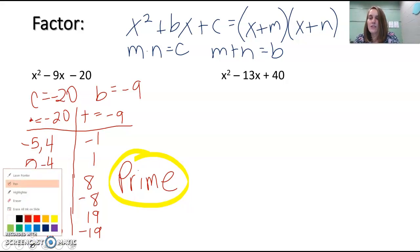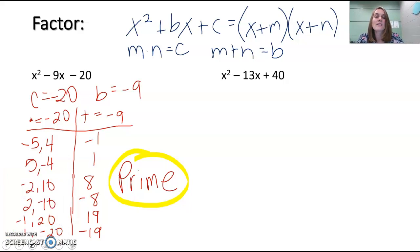Let's try the other one: x² - 13x + 40. Same idea—I'm going to make a table. I want numbers that multiply to equal our c, which is 40, and add to equal our b, which is -13.